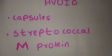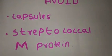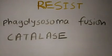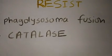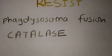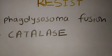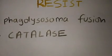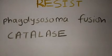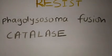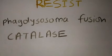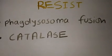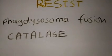Streptococcus has Streptococcal M protein. Bacteria resisting phagocytosis include M. tuberculosis via phagolysosome fusion inhibition. Staphylococcus aureus and Neisseria gonorrhoeae have catalase, which negates the effect of toxic oxygen radicals.